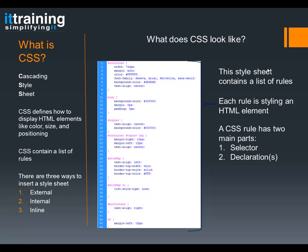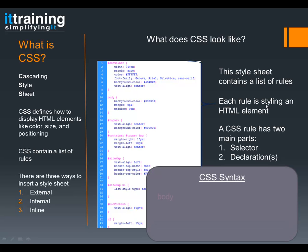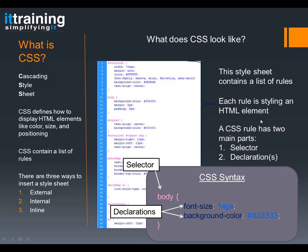A CSS rule has two main parts: the selector and declaration. The selector is the who, and the declaration is the how and the what. So here, the selector is the body tag — we're changing the body tag. The declarations are the properties — what we want to change. For example, we want to change its font size and its background color — changing it to 14 pixels, or changing it to the color hash 333333.